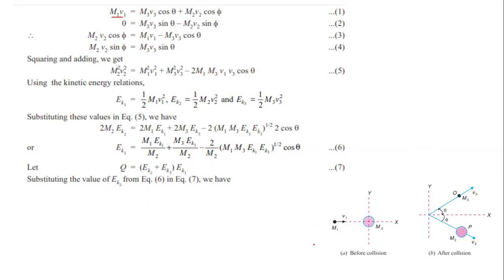Then we have the vertical direction component. Before the collision, the vertical component is zero. So we have: M3V3 sin theta minus M2V2 sin phi = 0. Rearranging: M2V2 cos phi = M1V1 minus M3V3 cos theta, and M2V2 sin phi = M3V3 sin theta.